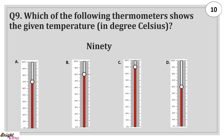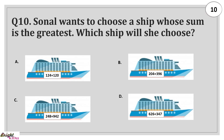Which of the following thermometers shows the given temperature? Answer: 90. Sonal wants to choose a ship whose sum is greatest. Which ship will she choose? Answer: 6. The addition of this ship will be highest.